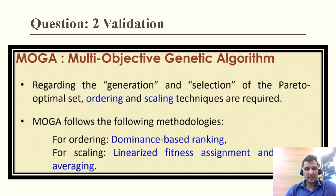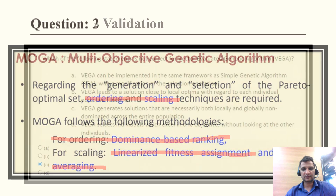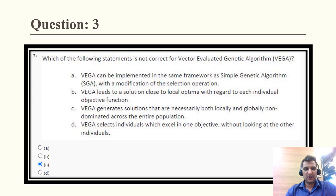The validation: regarding the generation and selection of the Pareto optimal set, ordering and scaling techniques are used. For ordering, dominance-based ranking is used, and for scaling, linearized fitness assignment or fitness averaging is used. This validates that MOGA is the correct answer.